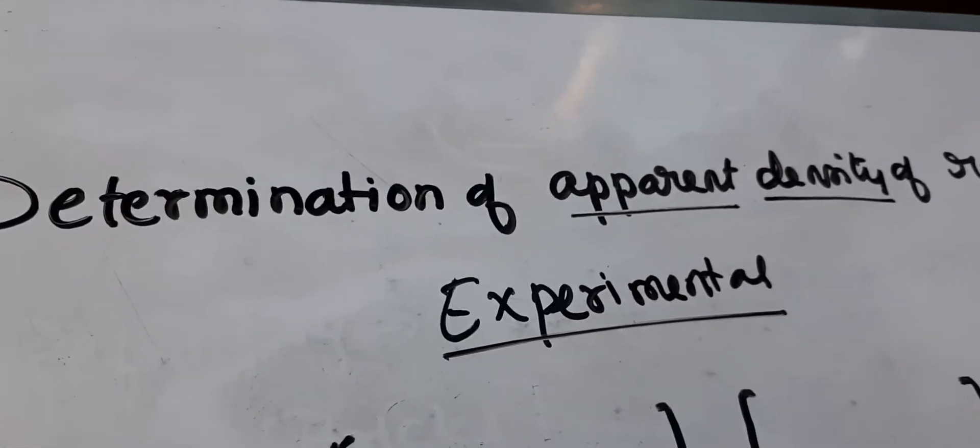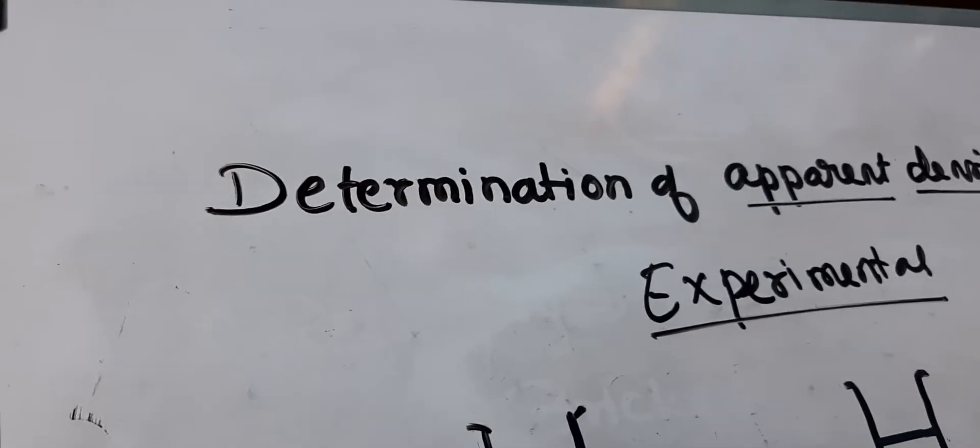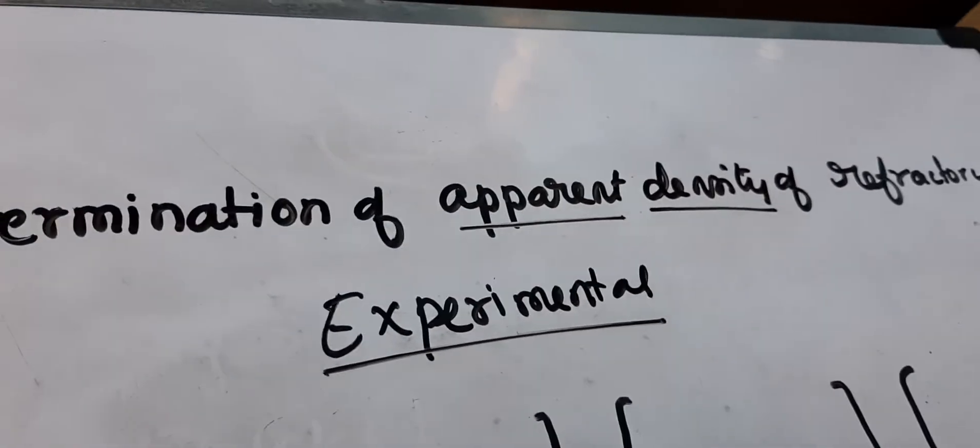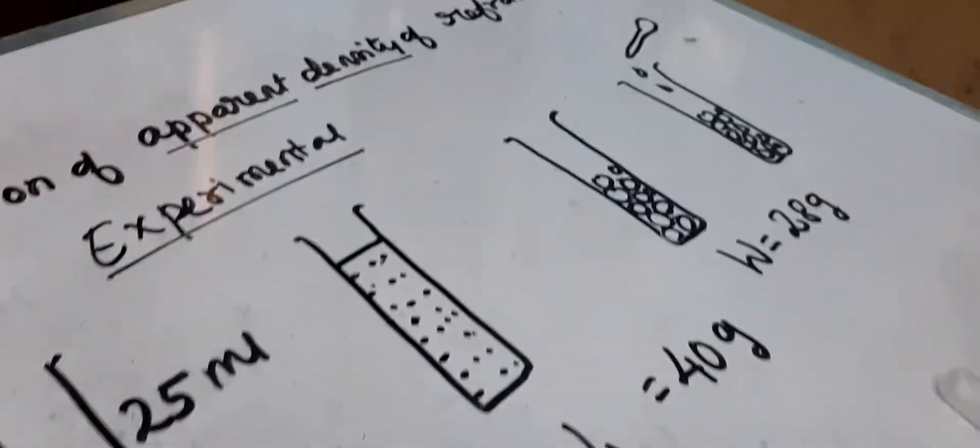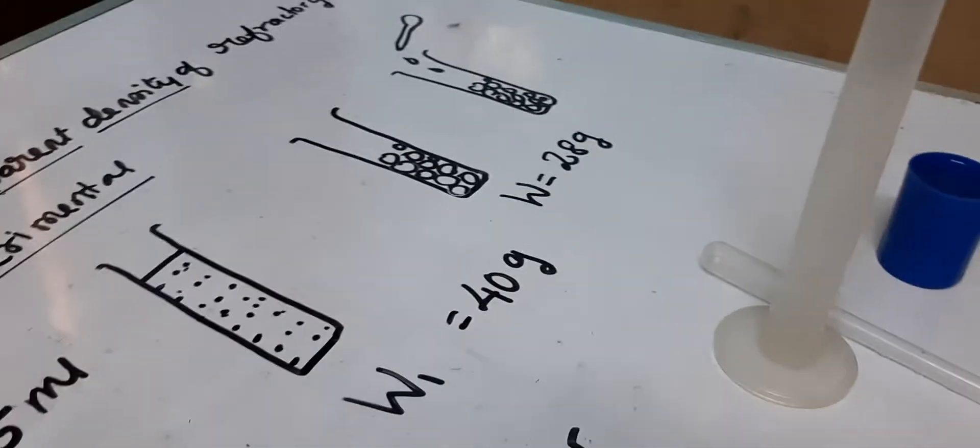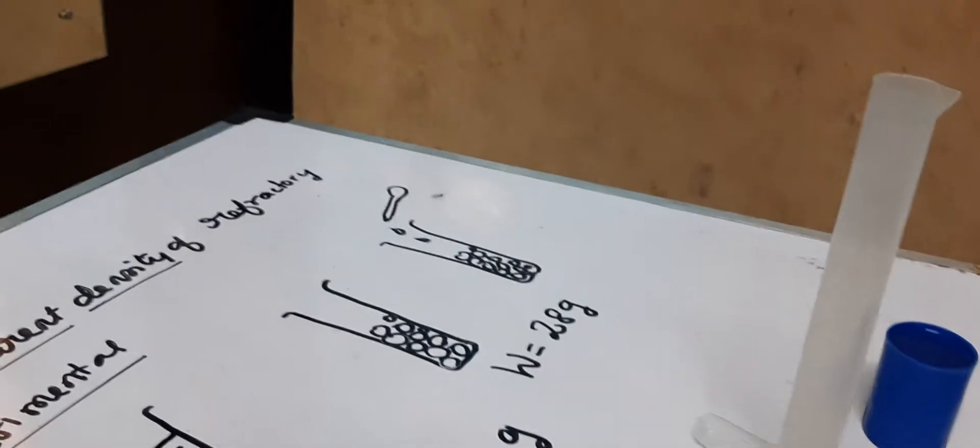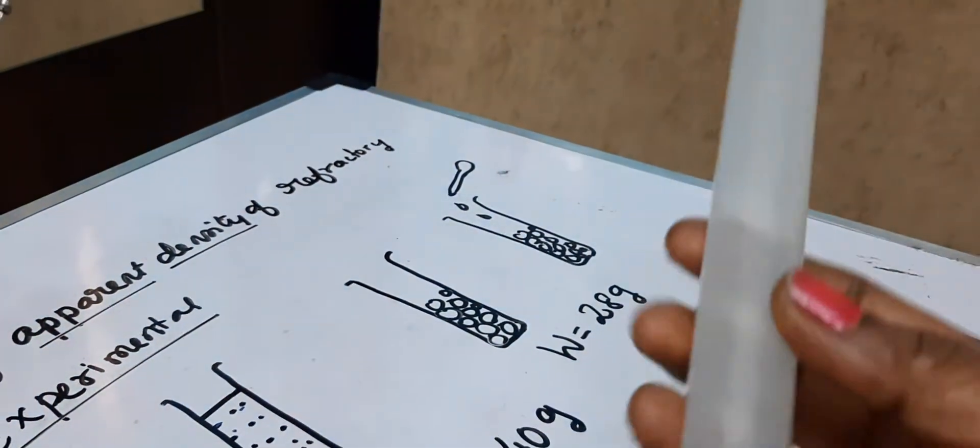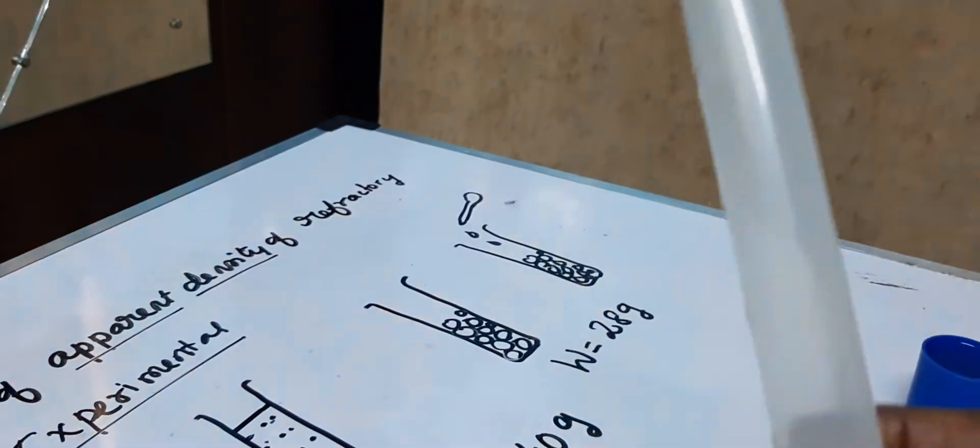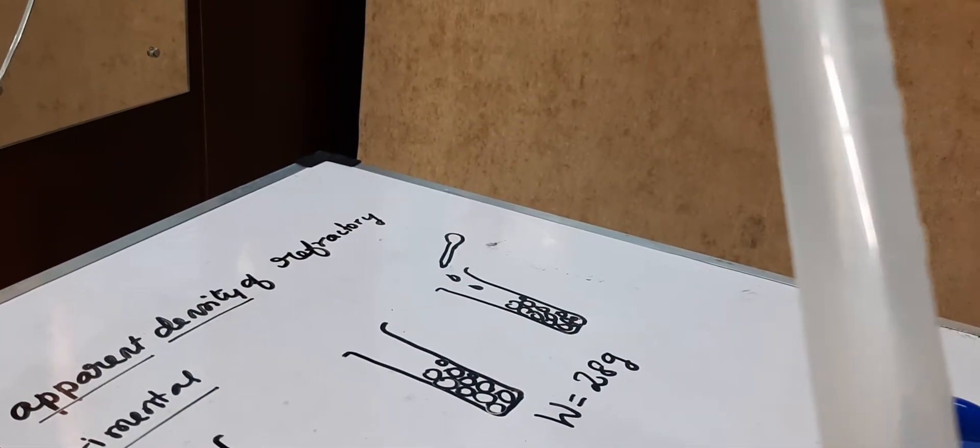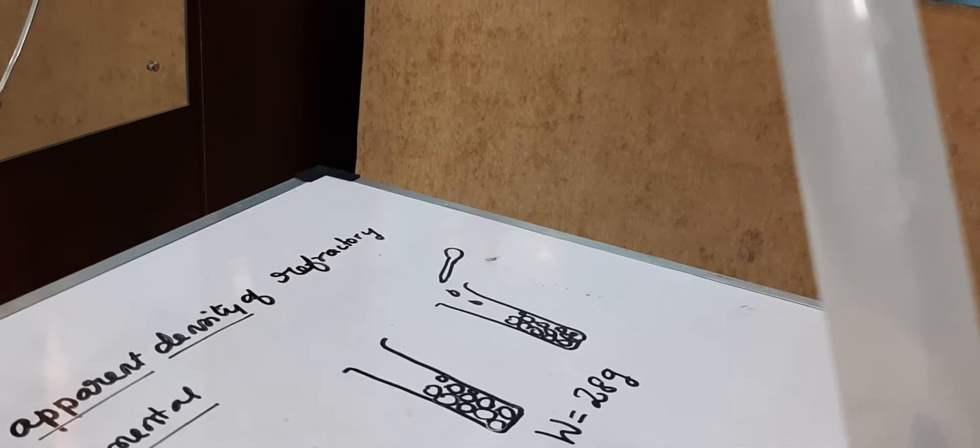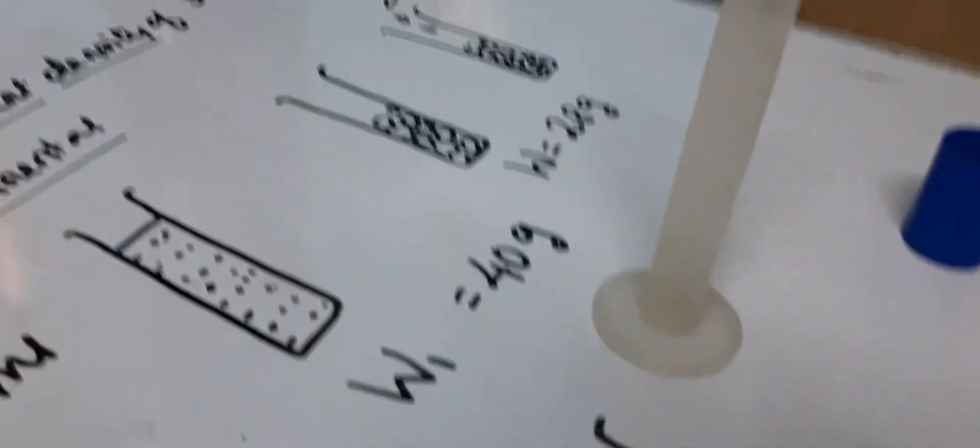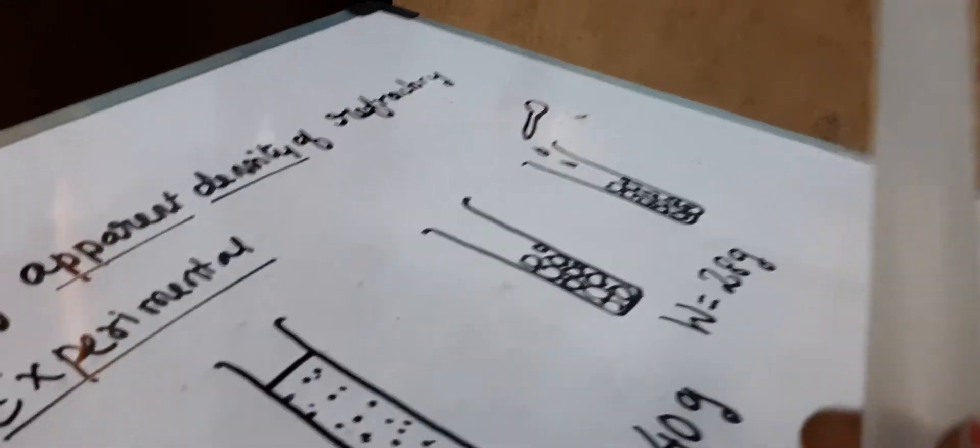Guys, in the previous video we saw the theoretical portion of determination of apparent density of refractory. Now I would like to show you the practical portion. This is the measuring cylinder taken, it measures 25 ml, so it's a 25 ml measuring jar.